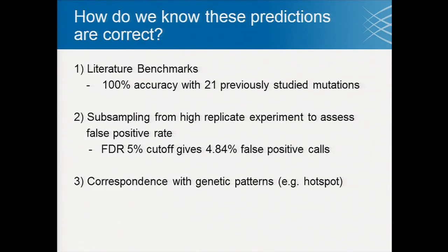How do we know these predictions are correct? We have a set of benchmarks with known mutation functions, and we were very accurate with those. We also assessed our false positive rate by running a high-replicate experiment with 21 replicates of a subset of ORFs. Simulating a smaller study with just eight replicates from the same ORF, we determined how many times we falsely called a functional impact. The false positive rate from the simulation matched our expected false discovery rate very accurately.